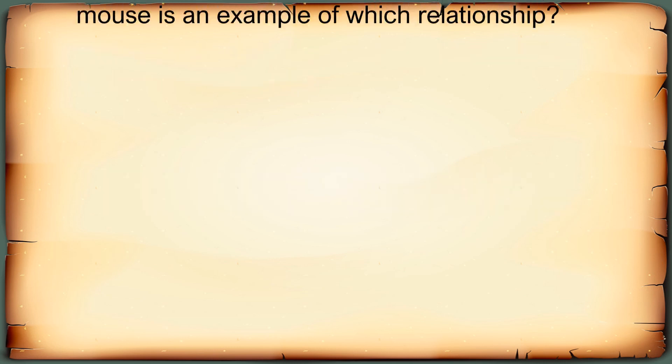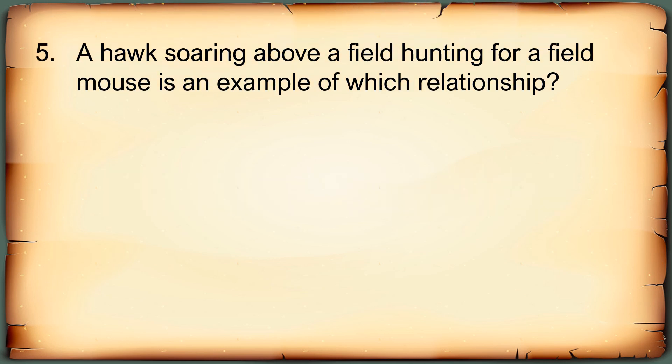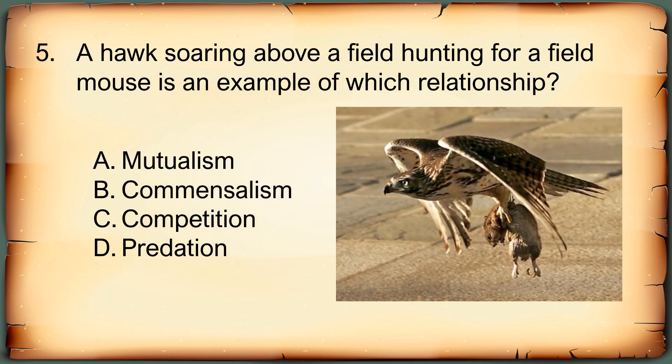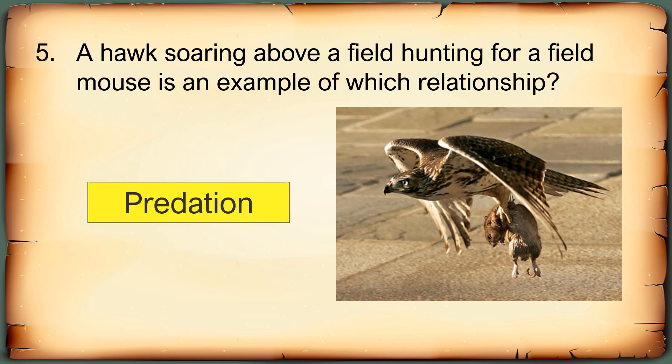Last question: A hawk soaring above a field hunting for a field mouse is an example of which relationship? A. Mutualism, B. Commensalism, C. Competition, or D. Predation. Correct answer: Predation. I hope that you did well in the quiz. You may also write your scores in the comment section below. Thank you for watching and have a good day. Please don't forget to like and subscribe.